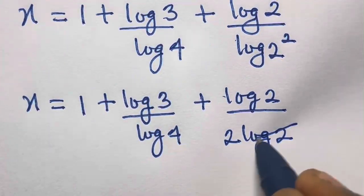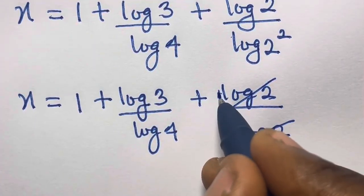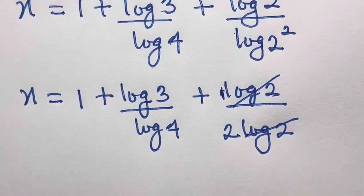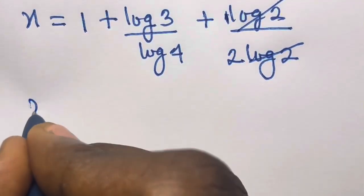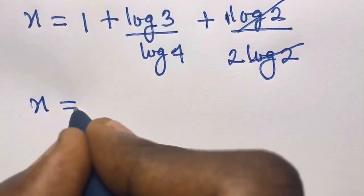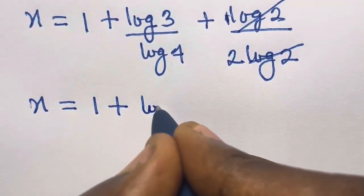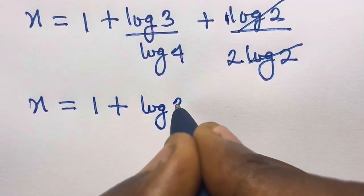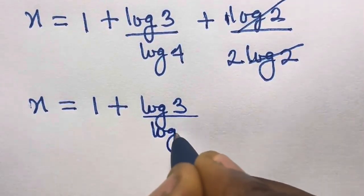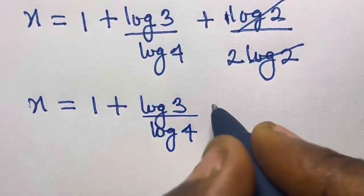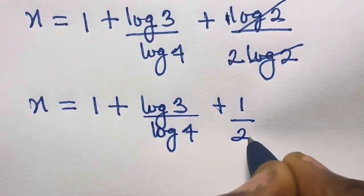Looking at the log 2 divided by 2·log 2, the log 2 terms cancel, leaving 1/2, and we remain with 1 here. So we have x equals 1 plus log 3 divided by log 4, plus 1 divided by 2.